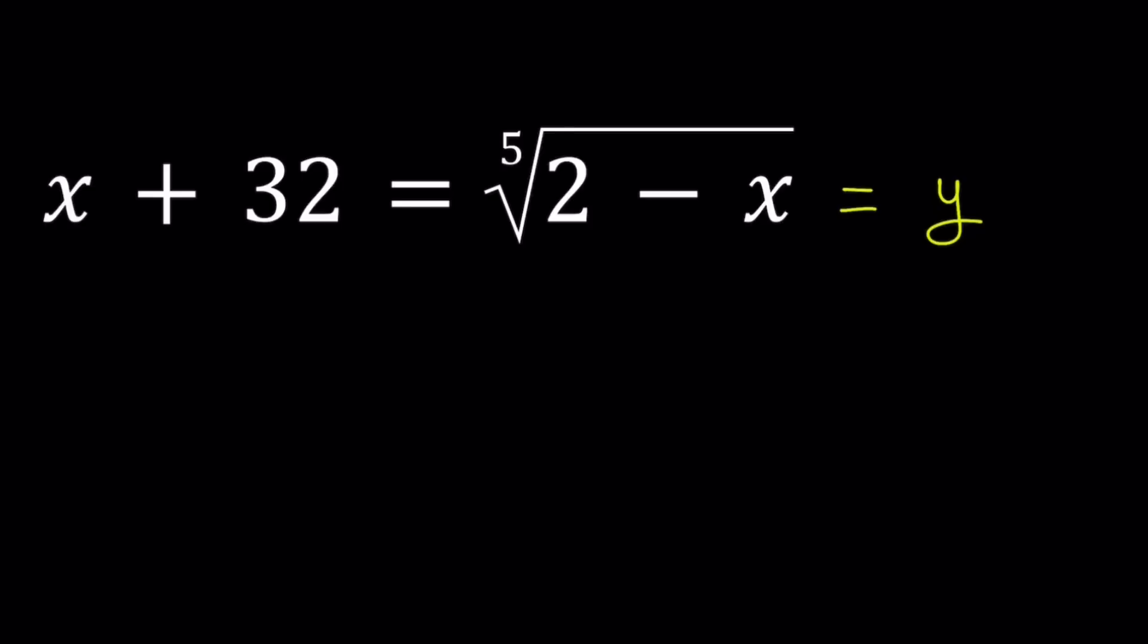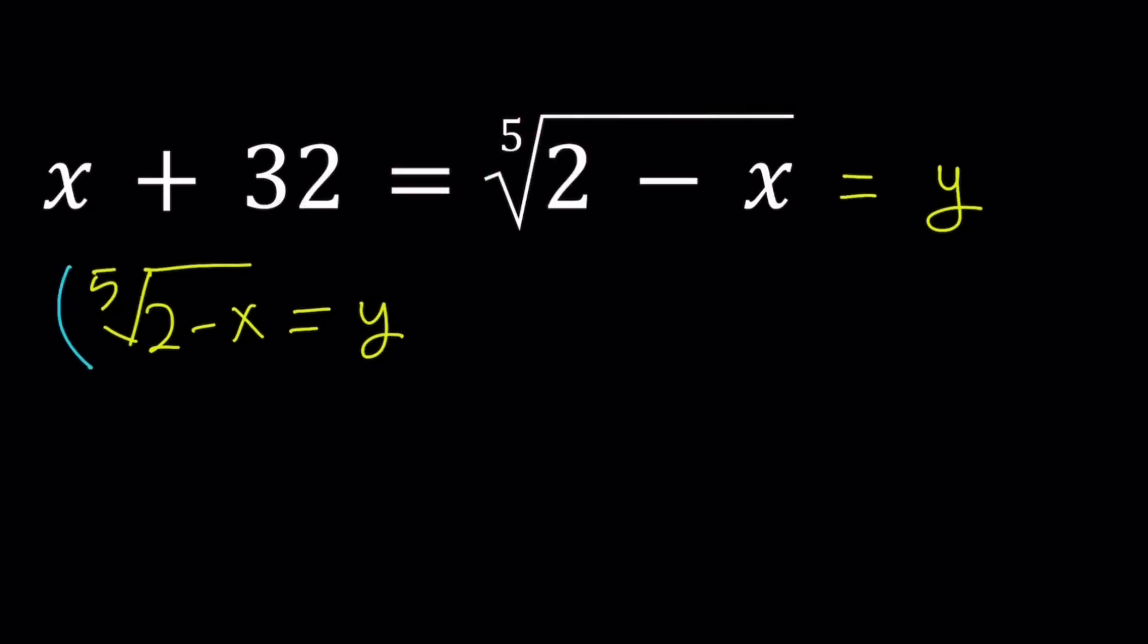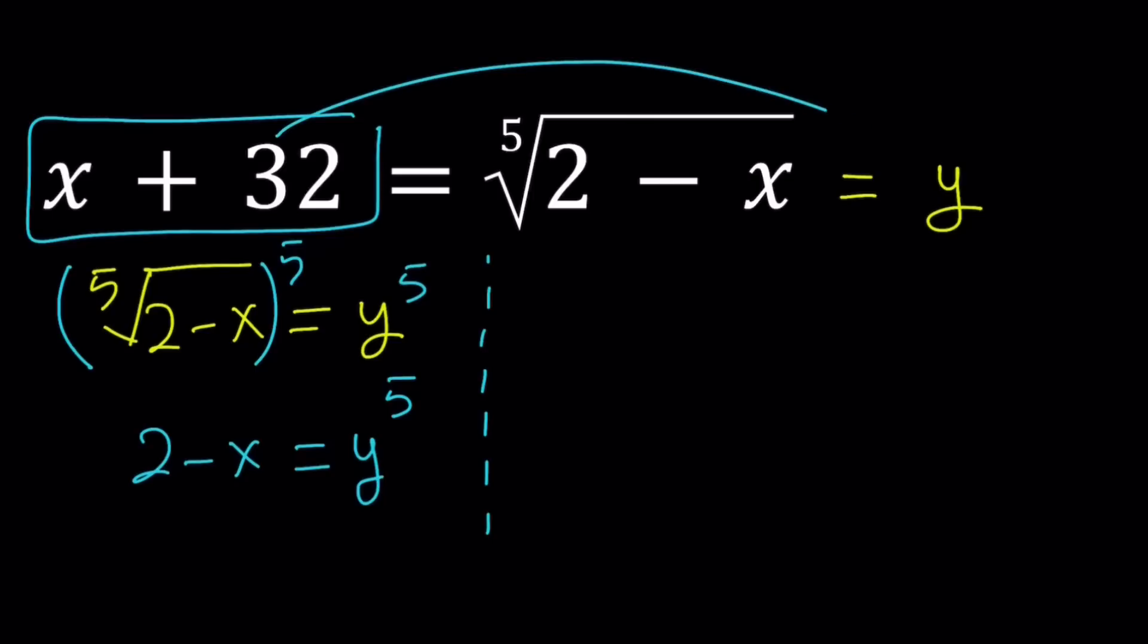Let's start with the radical. The fifth root of 2 minus x equals y. We're going to raise both sides to the fifth power, and that way we're going to get rid of the fifth root. This is going to give us 2 minus x equals y to the fifth power. Let's leave it at that and take a look at the other equation. The second equation is going to come from here: x plus 32 equals y.